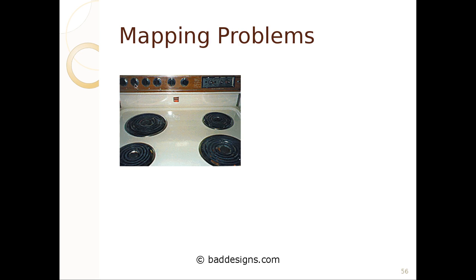Here's a mapping problem with a stove: which dial controls which burner? If you put a pot of water on one burner and click what you think is the right dial — perhaps assuming a left-to-right order — you might turn on the wrong burner, your water won't boil, and you might even cause a fire. A better design copies the layout of the burners in the arrangement of the dials, making the mapping apparent.